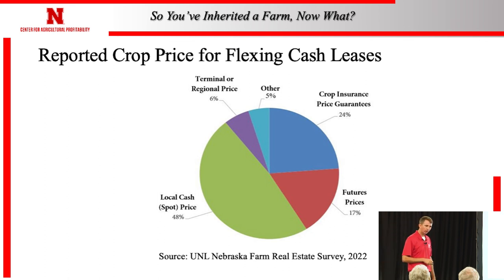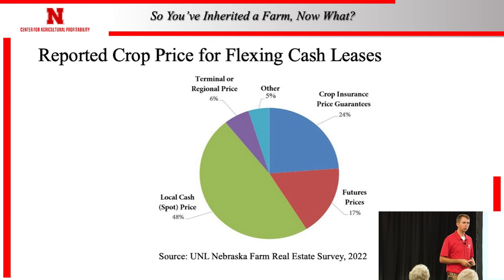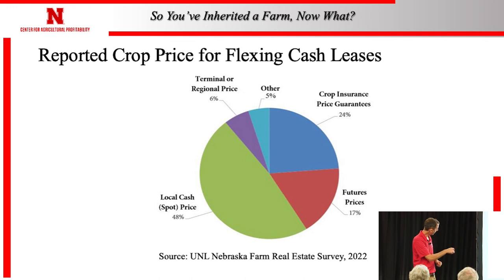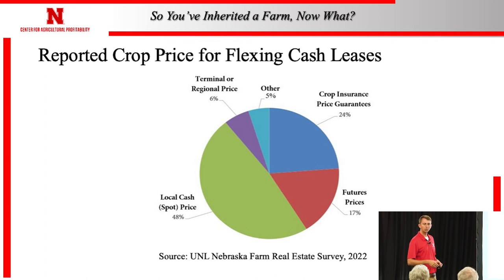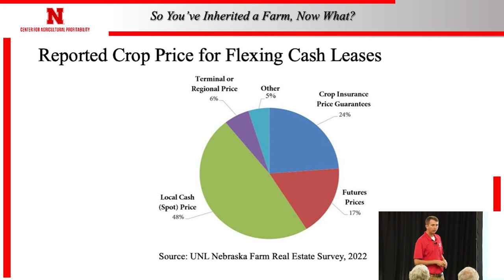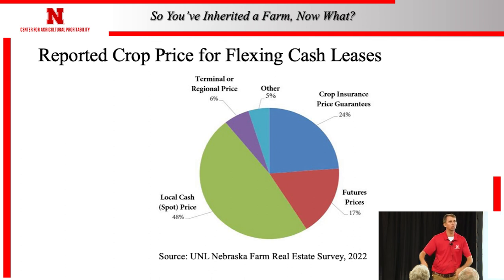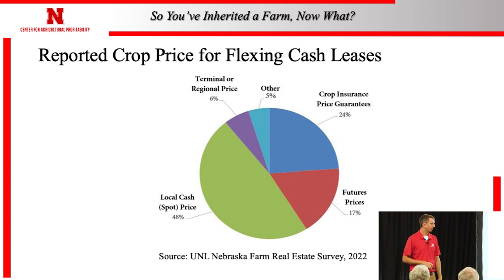When it comes to that price component in flex leases, there are different prices associated with crops. Are you talking about the cash price or the local spot price? About half the people use the local spot price. Not quite 25% use the crop insurance planting and harvesting time price guarantees — those are an average associated with the futures price. The main thing people are trying to capture is: is there a change between what you initially expect when the crop gets planted versus what actually happens when it's harvested?